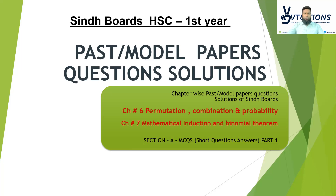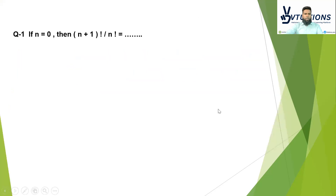Now we move towards our lecture. In the first slide, the chapter names are: Chapter number six — Permutation, Combination, and Probability — and Chapter number seven — Mathematical Induction and Binomial Theorem. These two chapters have one combined paper. Remember the chapter names: Permutation, Combination, Probability for chapter six, and Mathematical Induction and Binomial Theorem for chapter seven. We will do MCQs — this is part one.